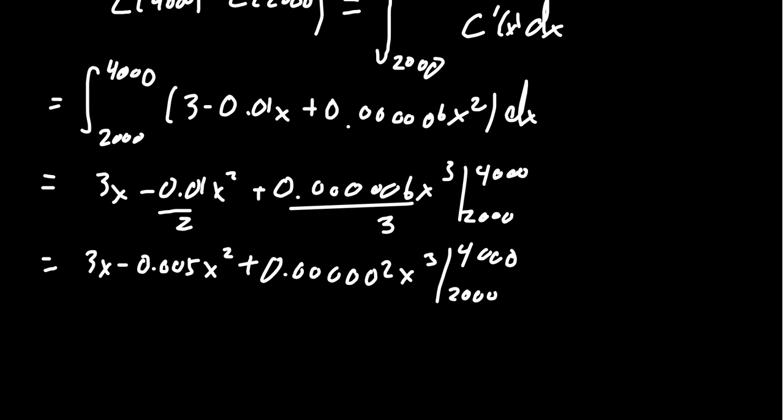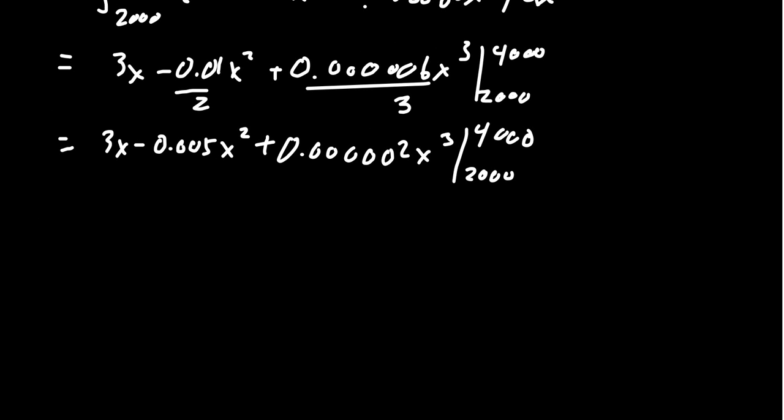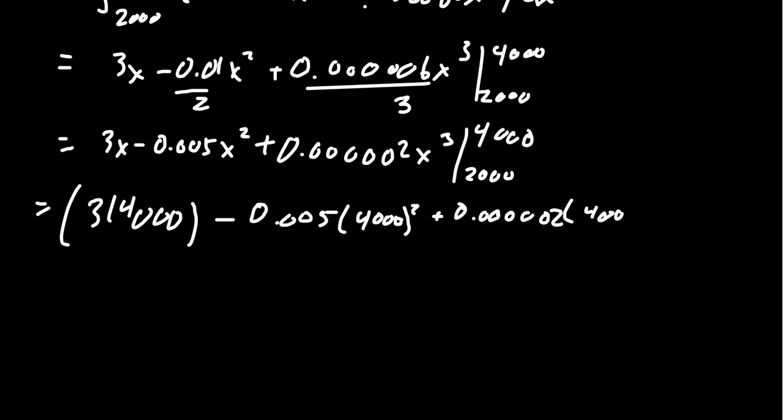And so the calculus is really painless in this situation. It turns out, with these type of problems, it's always the arithmetic. We're going to plug in the 4,000 first. And so when we do that, we're going to get 3 times 4,000 minus 0.005 times 4,000 squared.